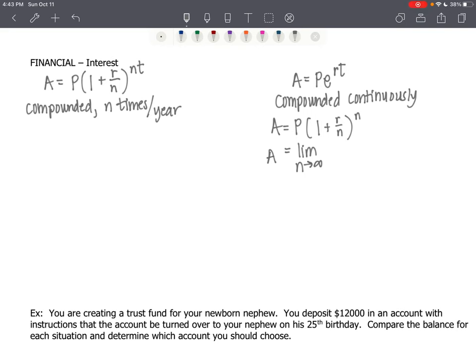So continuously means that the number of times it's compounded would almost be an infinite number of times. So not just 12 times, which would be monthly, not just daily, which would be 365, but constantly, continuously.